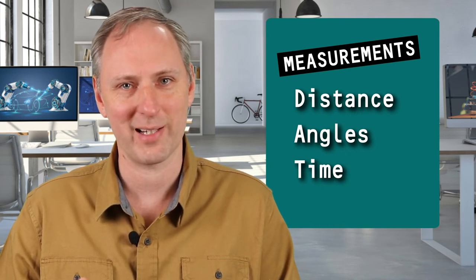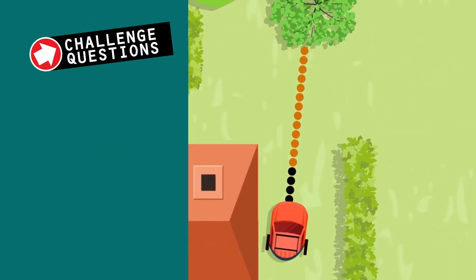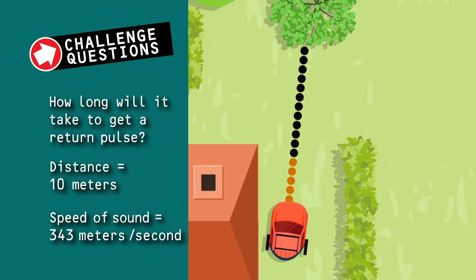Now, get your pencils ready for this week's challenge questions. If we had a robot with a sonar sensor, how long would it take us to get the return pulse, or echo, from an object? We know the object is 10 meters away, and we know that the speed of sound in air is 343 meters per second.